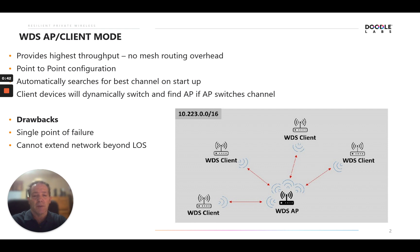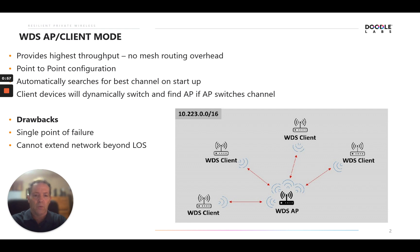Another advantage: it automatically searches for the best channel on startup, and client devices will automatically and dynamically switch to find the access point should the AP change channel. The drawbacks are there's a single point of failure, there's no redundancy, and it cannot extend your wireless network beyond line of sight as you could in a mesh topology where you could hop beyond line of sight conditions.